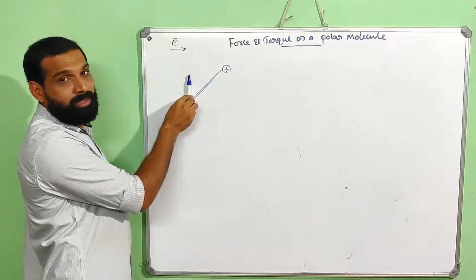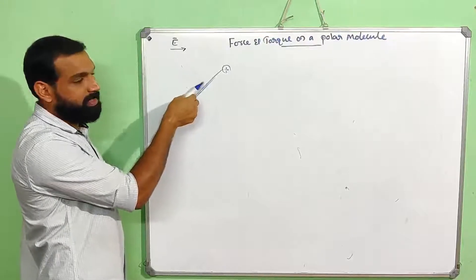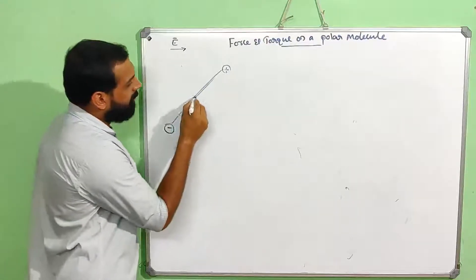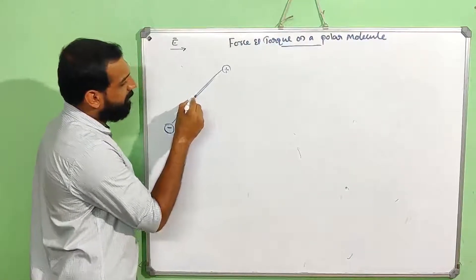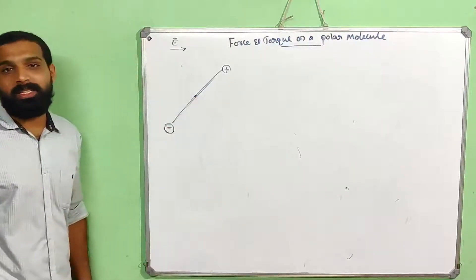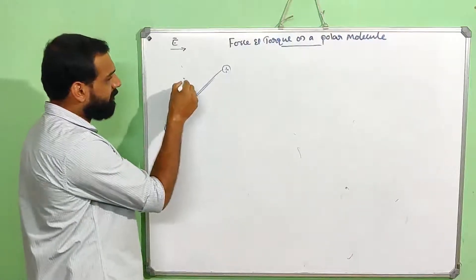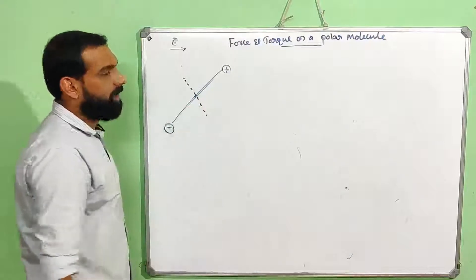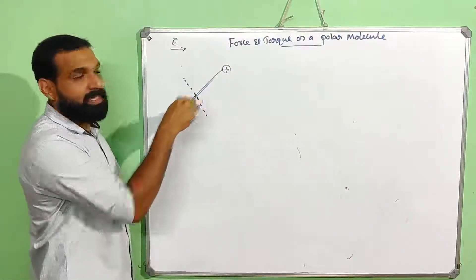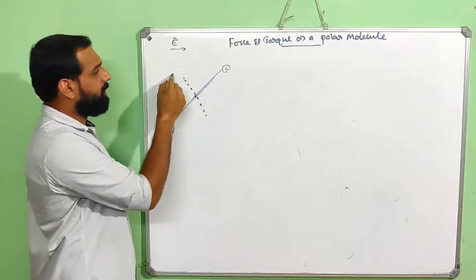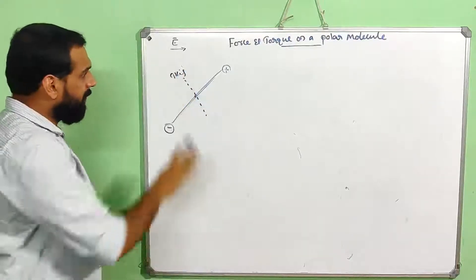If we apply an electric field, it will act on the positive and negative charges. We are considering the origin as the center of the dipole — that is the origin. Then there is an axis of rotation. If you apply the field, it will rotate. This is the center; this is the axis of rotation. Now we will look at the direction of the electric field.